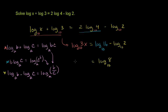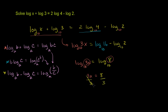The left-hand side is log base 10 of 3x, and the right-hand side simplifies to log base 10 of 8. Since 10 to some power equals 3x and 10 to the same power equals 8, we get 3x equals 8. Dividing both sides by 3, x is equal to 8 over 3.